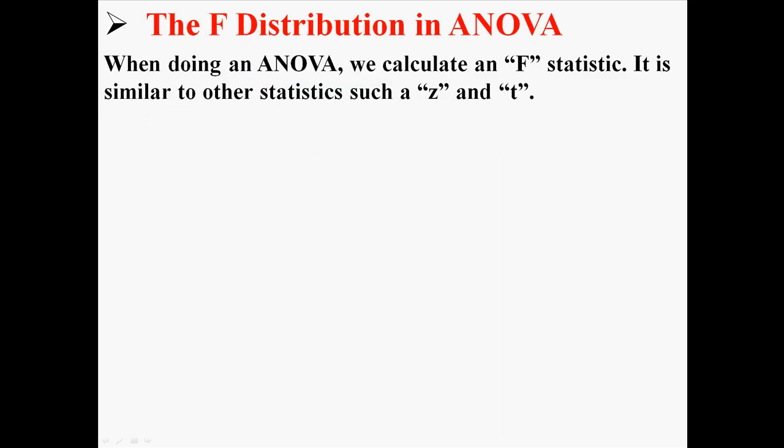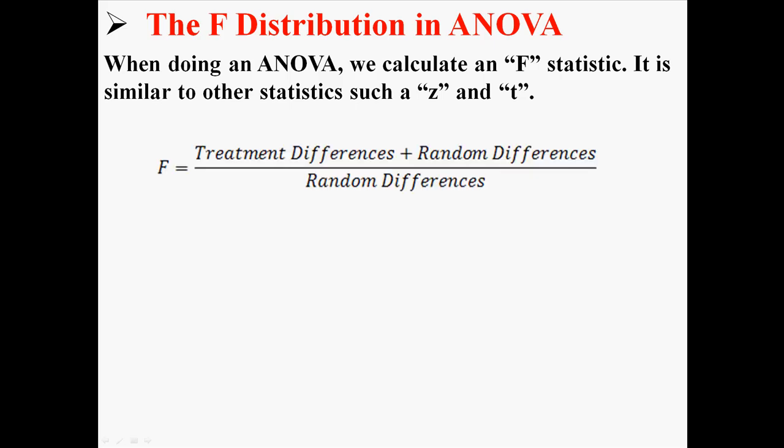And of course, we have the f distribution. When doing an ANOVA, we calculate an f statistic. It is similar to the other statistics I've talked about so far, like the z and the t. F is at its most basic form like this: it is treatment differences plus random differences divided by random differences.